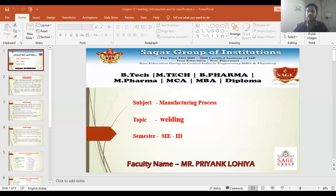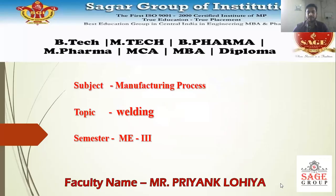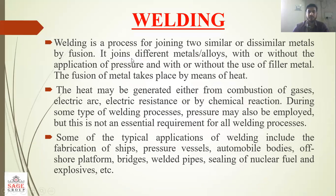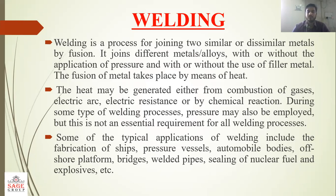So what is the welding process and how to classify it? Welding is a process for joining two similar or dissimilar metals by fusion. It joins different metal alloys with or without the application of pressure and with or without the use of filler metal. The fusion of metal takes place by means of heat. Welding is basically the fusion of two materials.